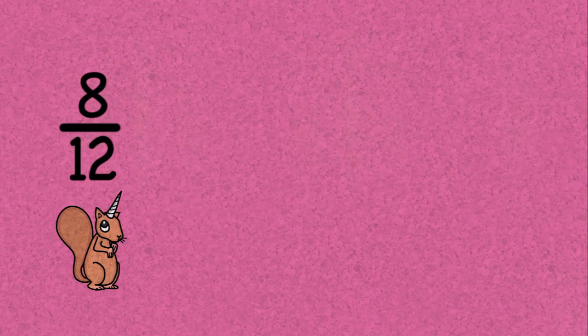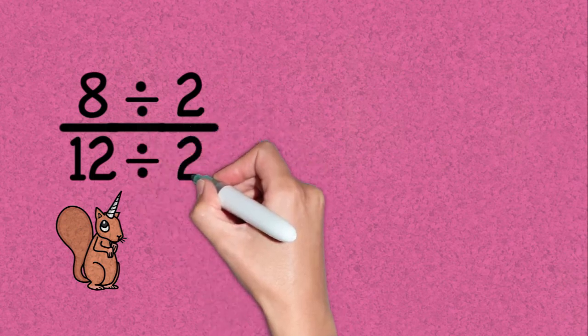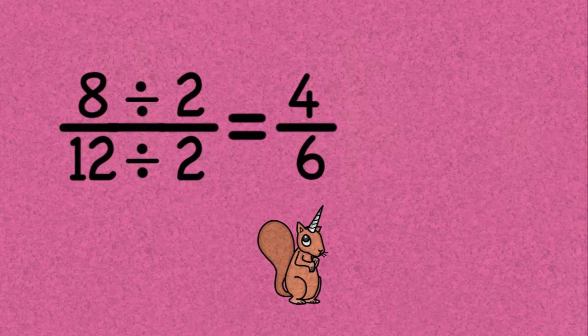Let's look at a few examples. To start, let's simplify the fraction eight-twelfths. First, we need to figure out what number goes into both eight and twelve. Since both numbers are even, we know that they're divisible by two. Eight divided by two is four, and twelve divided by two is six, giving us four-sixths.